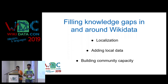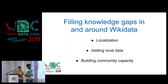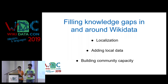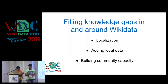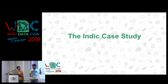But this is not what we are going to talk about here today. We're going to talk about how, in India, we first have to fill the knowledge gaps within Wikidata so then we can do all these amazing things. There are knowledge gaps in localization — we need to add a lot more labels in different languages, and there needs to be local data about local places and people. But the main aspect is to build the community capacity to do all that.